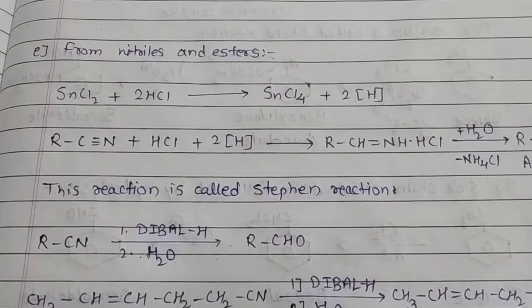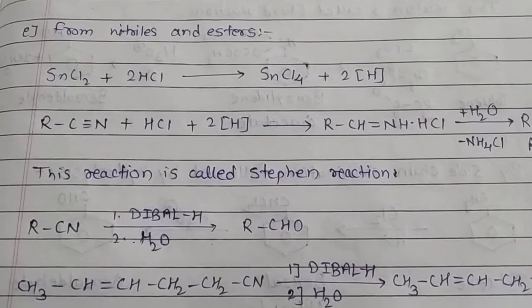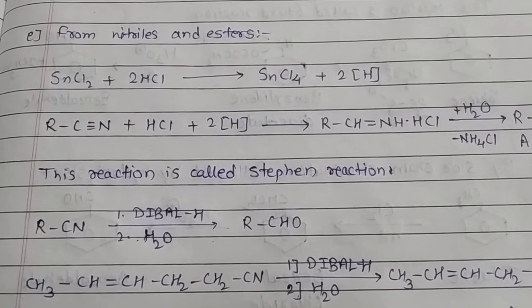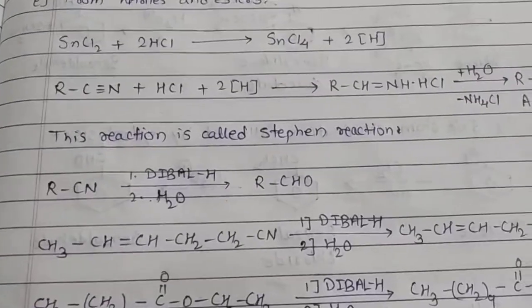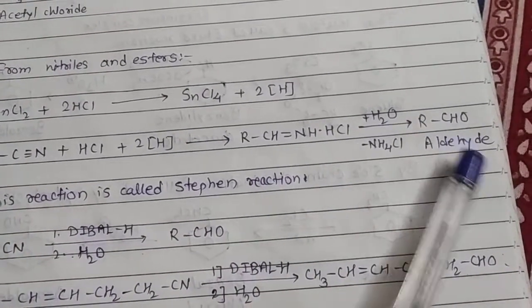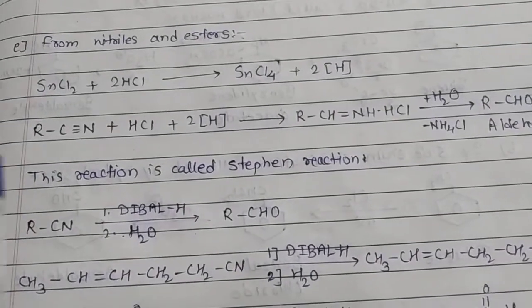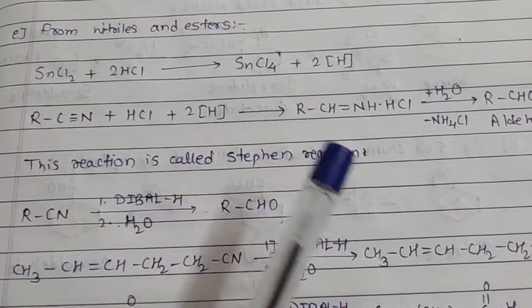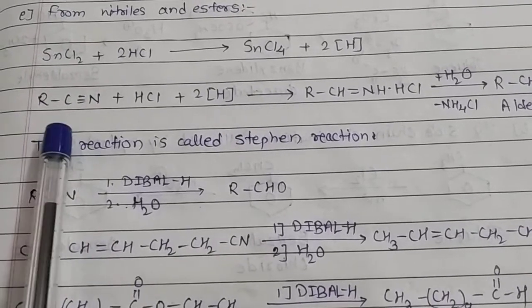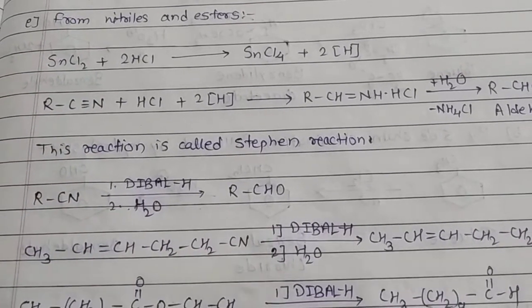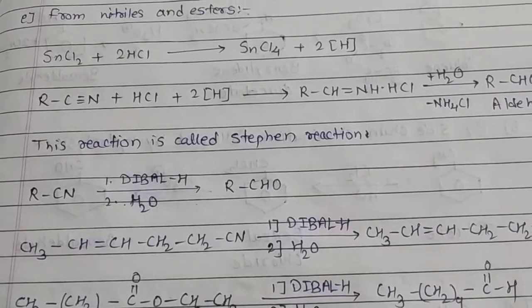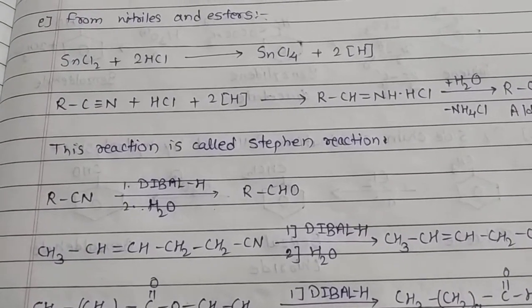Next is from nitriles and esters. Tin chloride with HCl gives SnCl4 and hydrogen gas is generated. Two hydrogens are generated in this reaction. They react with cyanide, CN, and form this intermediate which ultimately converts into aldehyde. In short, cyanide gets converted into aldehyde by using SnCl2 plus HCl. It gives two hydrogens and cyanide gets converted into aldehyde. This reaction is called Stephen reaction, when cyanide gets converted into aldehyde in the presence of tin chloride and HCl.